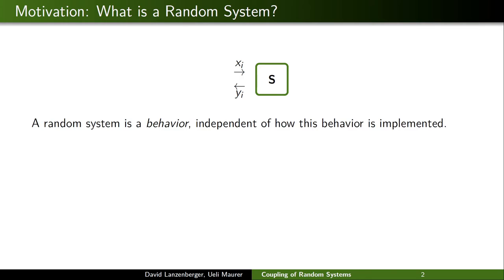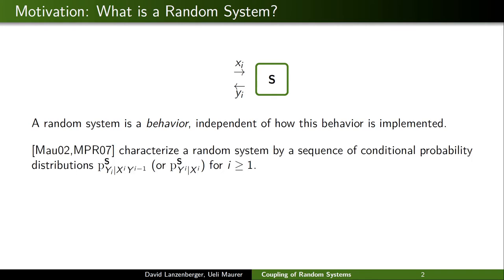What we mean when we say random system is really the behavior, and this is completely independent of how the behavior is implemented. So we don't talk about any computational model or about how such a system would be represented, say for example as pseudocode. Random systems have been characterized before by a sequence of conditional probability distributions, with the understanding that for every sequence of inputs and outputs and a new next input xi, you get a probability distribution of the corresponding output yi.